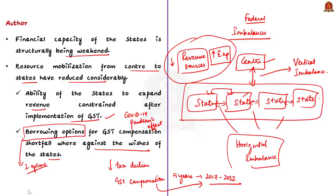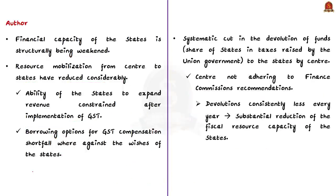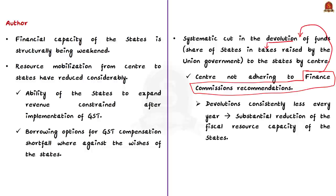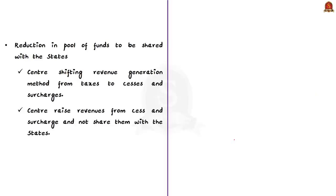Apart from this, the author talks about the systematic cut in devolution of funds to state governments by the central government. Devolution means the share of states in taxes raised by the union government. The Finance Commission, which has constitutional powers, recommends the devolution of funds the center has to give to the states. The author states that the central government is not adhering to the commission's recommendations — devolutions have been consistently less every year. Between 2014-15 and 2019-20, states got roughly around ₹7.98 lakh crores less than what was projected by the Finance Commission, resulting in a huge reduction of the fiscal resource capacity of state governments.